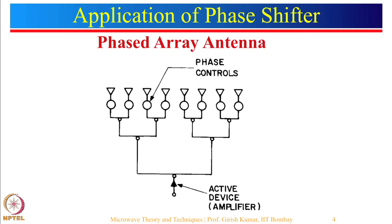One important application of phase shifters is in phased array antennas, which are used to scan the beam from, say, minus 30 to plus 30 degrees or maybe minus 60 to plus 60 degrees. There is a lot of emphasis on phased array antennas especially with the advent of 5G technology. 5G frequencies will be in the range of 20 gigahertz to maybe even 80 gigahertz — a very high frequency where the wavelength will be very small, so the antenna size will be small and multiple antennas can be used.